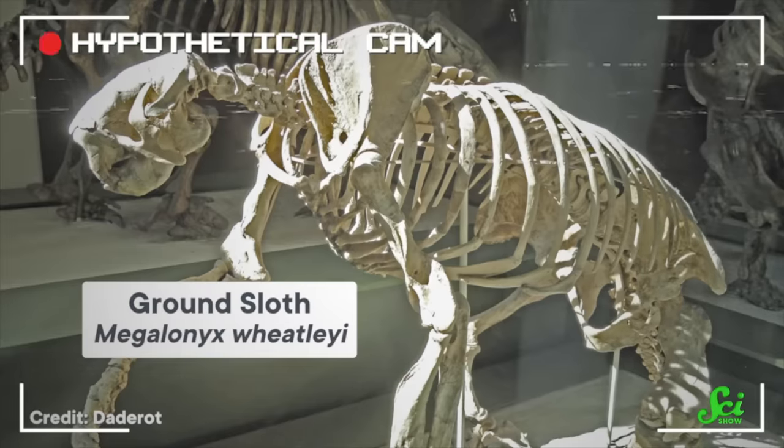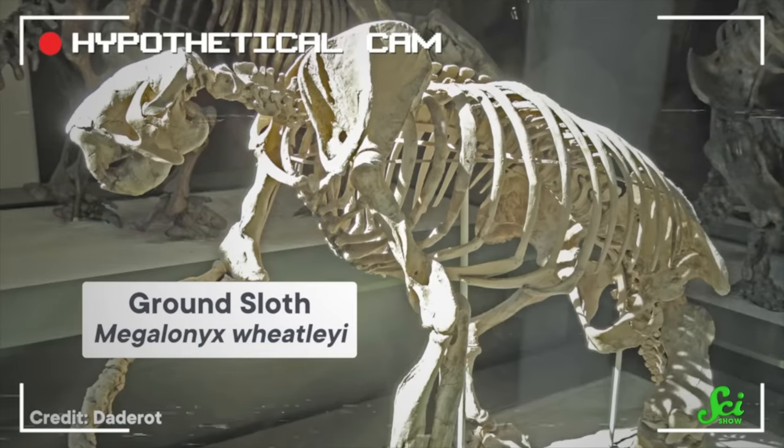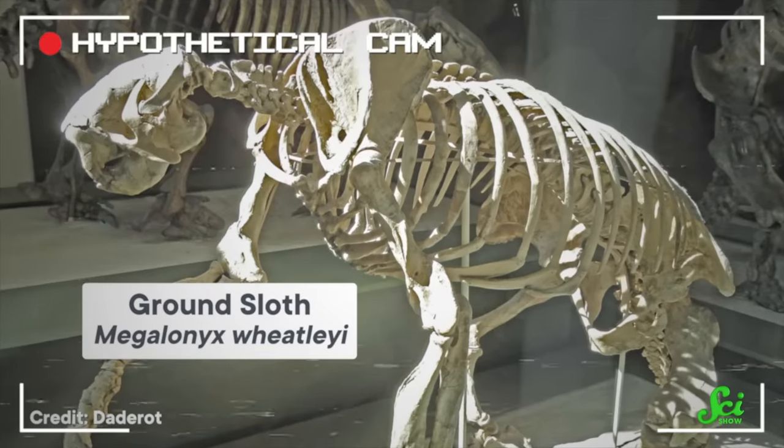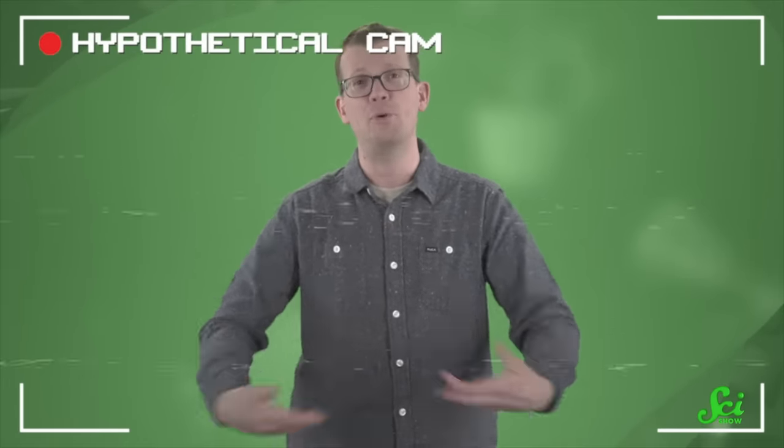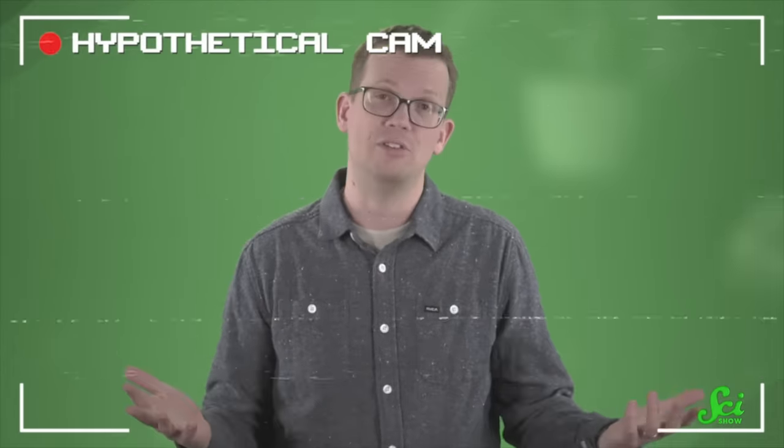Specifically, giant ground sloths. These were massive animals that roamed North and South America during the Pleistocene, and by golly, they would just go to town on these avocados and poop out those huge seeds everywhere. Sounds like it checks out, right?